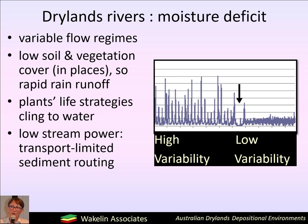The thing that characterises drylands is a moisture deficit, and this has several important consequences. Firstly, drylands rivers have extremely variable flow regimes. This example hydrograph shows that on the left, a typical drylands river situation where flow is usually low or non-existent, but flooding is a regular and expected part of the drylands flow regime. Whereas temperate zone rivers tend to be low variability and flooding, although it does happen, is not usually so big.